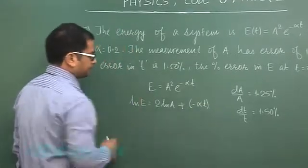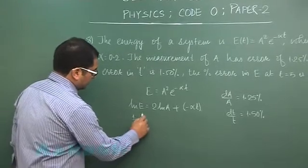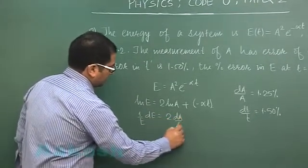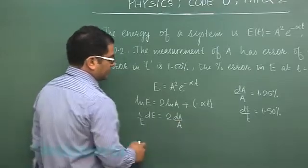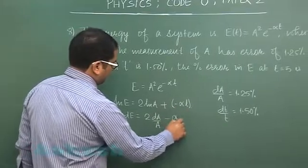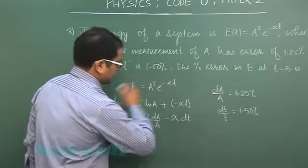Now taking derivative: 1 by E dE would be 2 dA by A, α is constant so that will be minus of α and that quite obviously would be dt.